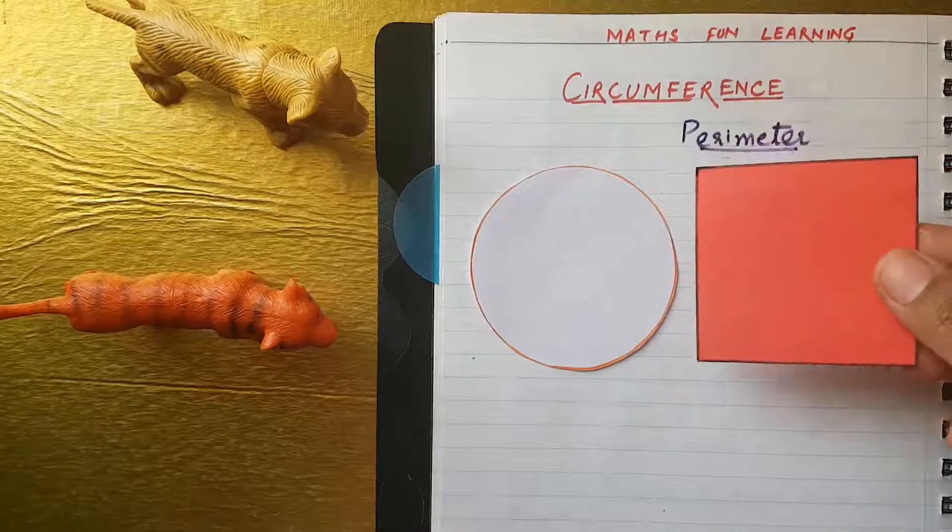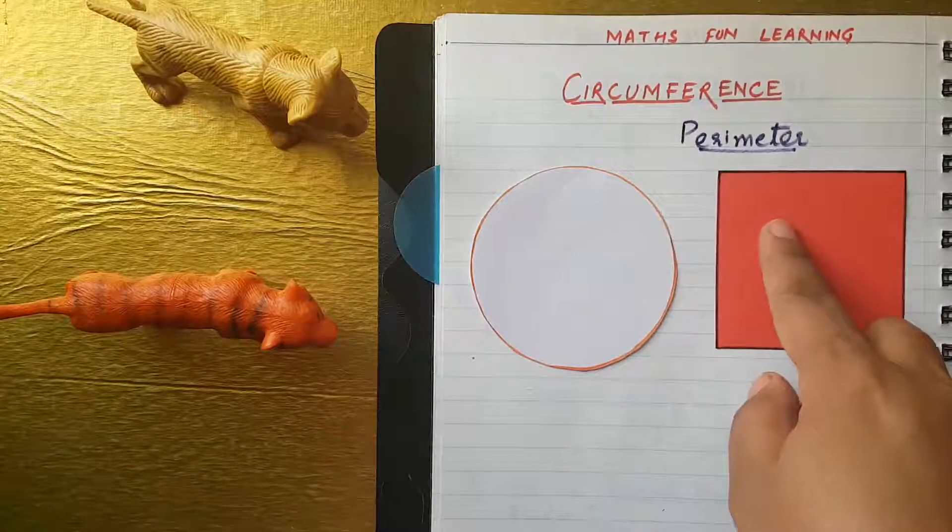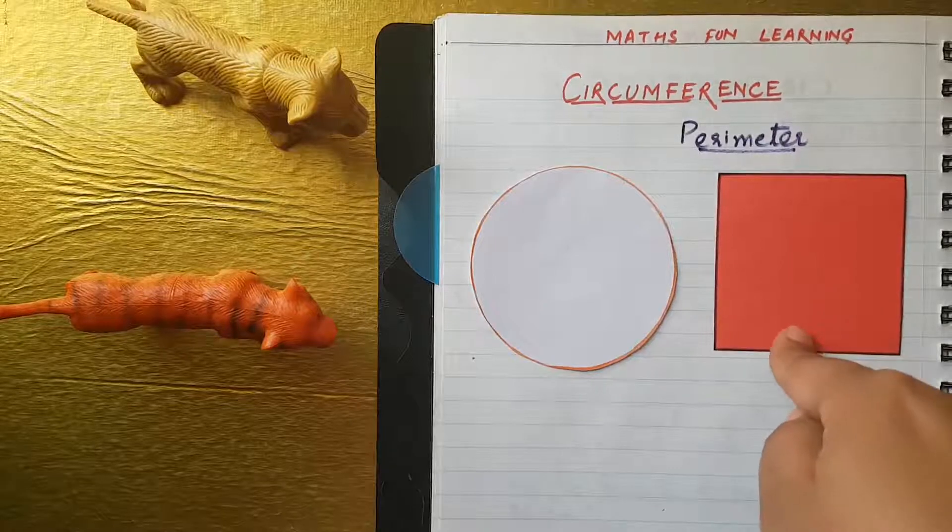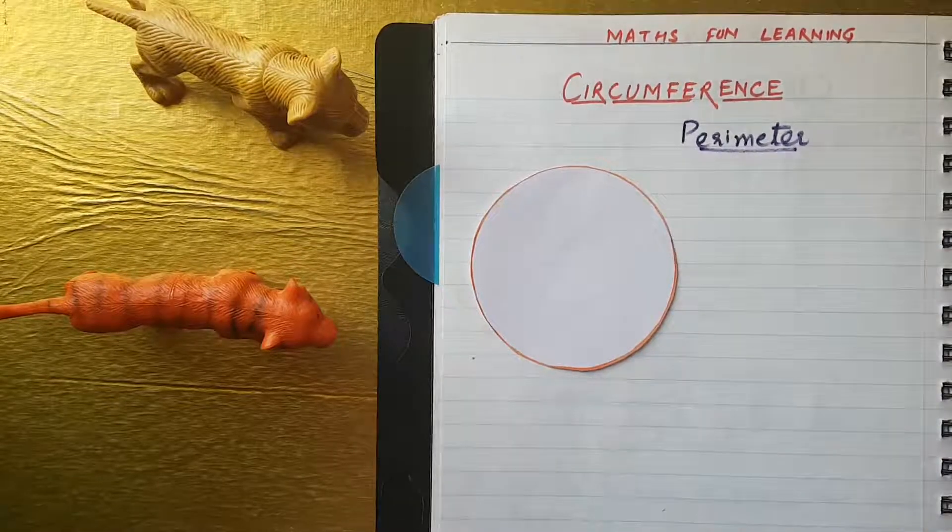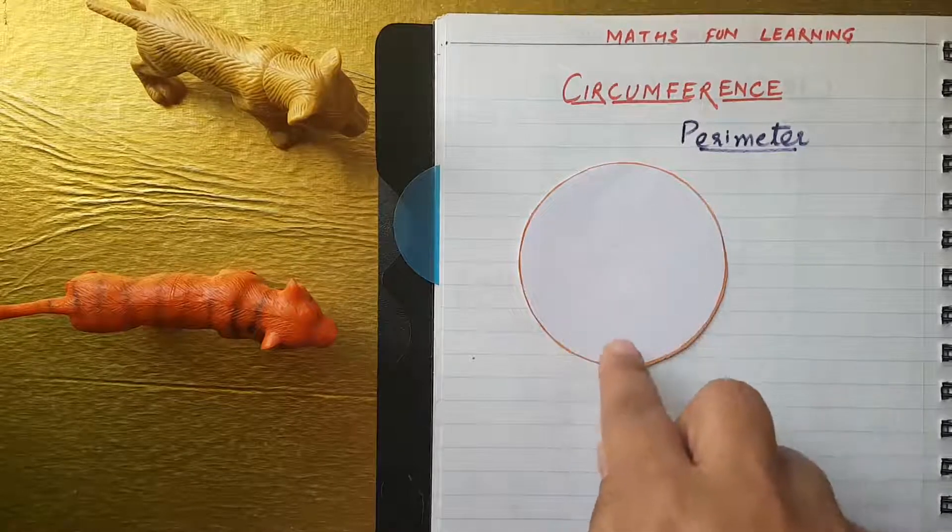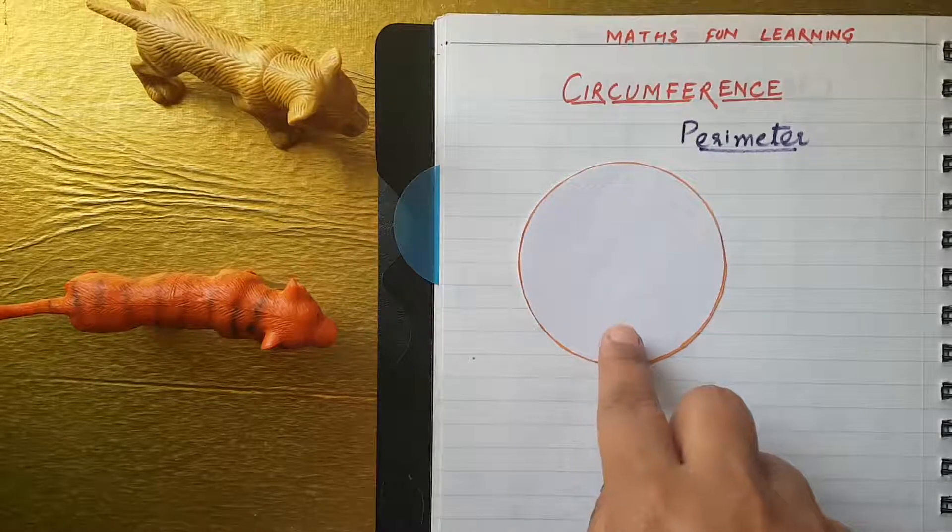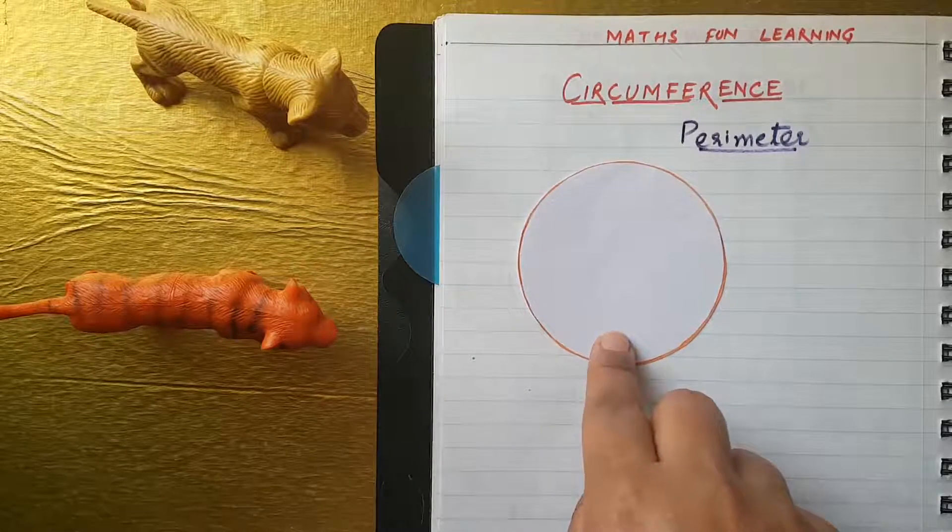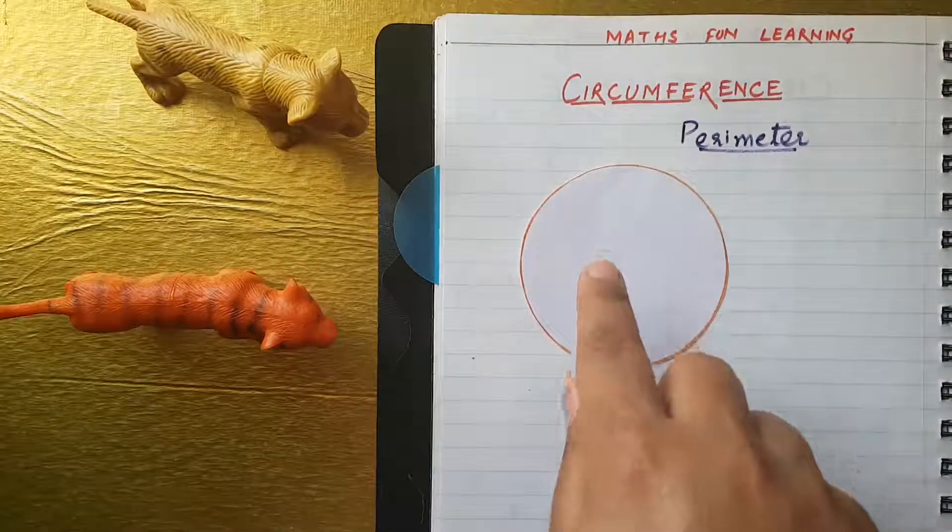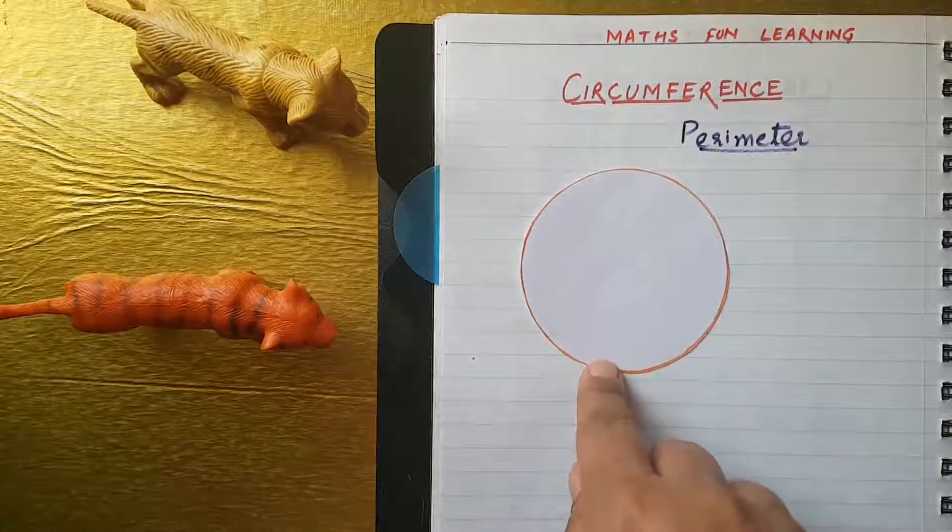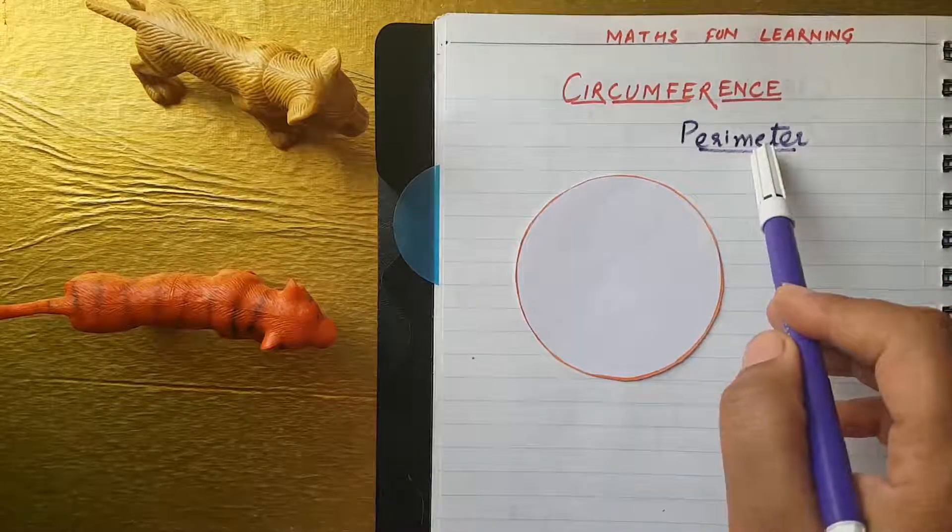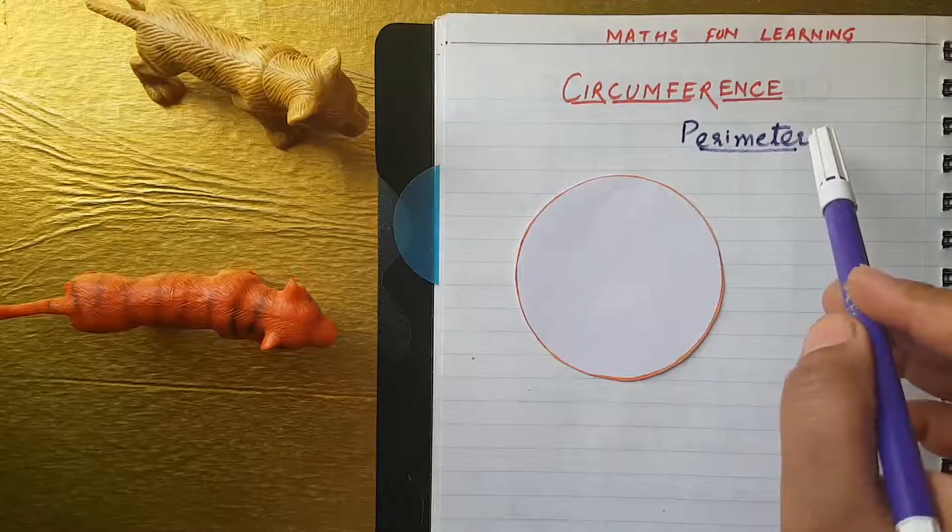So, the perimeter is the boundary. We have to measure the boundary of the shape which is made up of straight lines. And the circumference, we have to measure the circumference of the shape which is made up of curved lines. So, here is the difference. Only the same difference is, the C for circle, that means it is a perimeter. And perimeter, you know that, it is, find out the sum of all the sides.